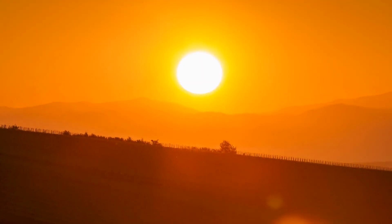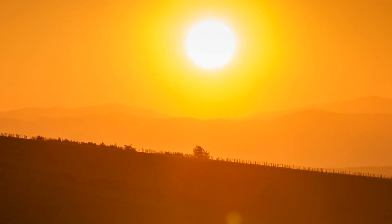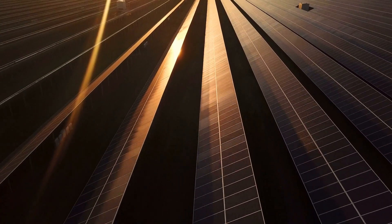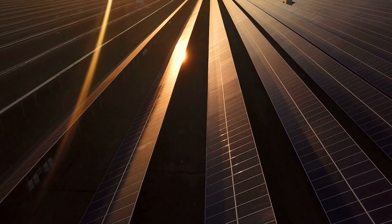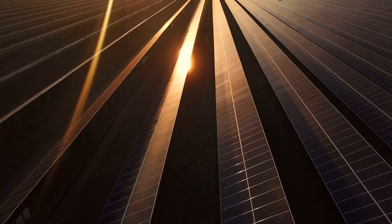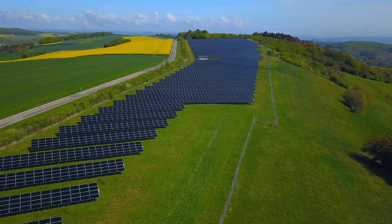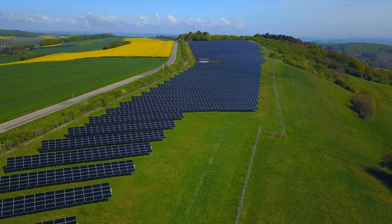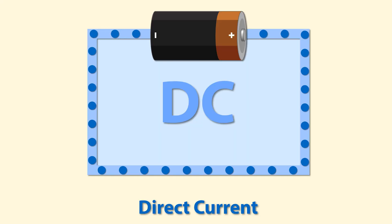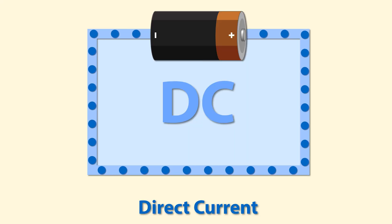Solar energy is generated when sunlight reaches the Earth's surface and is captured by photovoltaic cells in solar panels. These cells convert the sun's energy into DC electricity, which is a type of electrical current that flows in one direction.